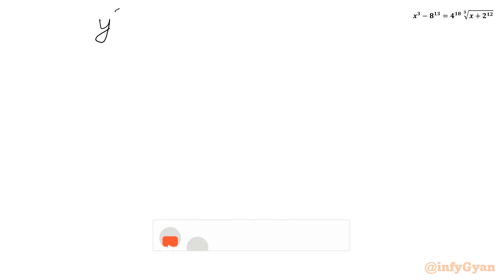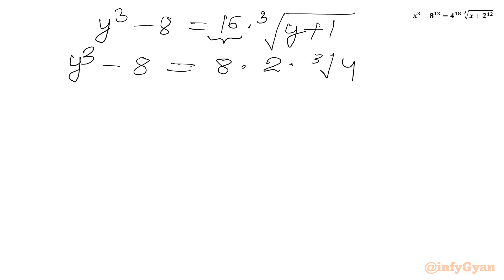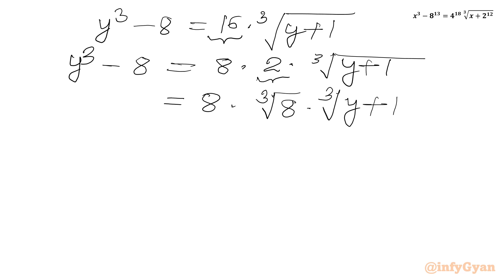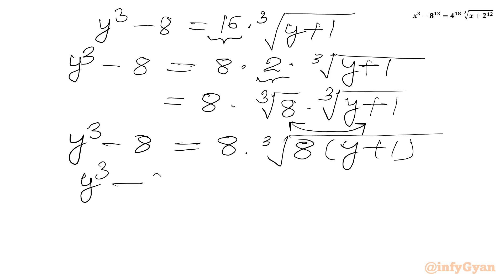Coming back to our problem: y³ − 8 = 16 × ∛(y+1). We split 16 as 8 × 2, so y³ − 8 = 8 × 2 × ∛(y+1). We can write 2 as ∛8, giving y³ − 8 = 8 × ∛(8(y+1)), or equivalently y³ − 8 = 8 × ∛(8y + 8).